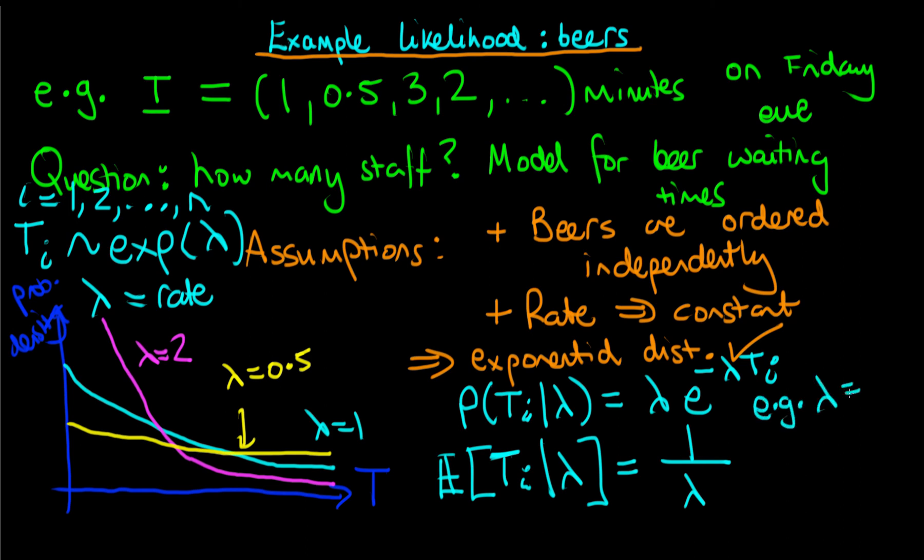if lambda is equal to 2, in other words two beers on average are being ordered every minute, then the amount of waiting time on average that you would wait would be 1 over 2. In other words, a beer would be being ordered every 30 seconds.